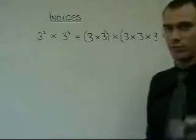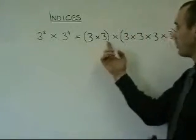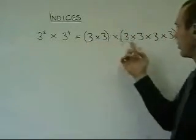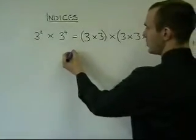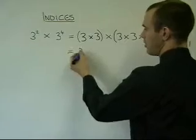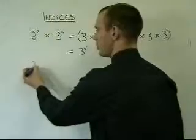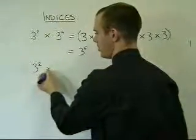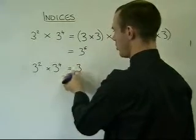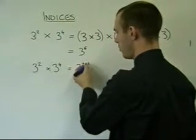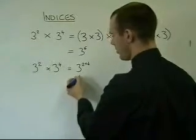What we now need to do is simplify this up. We are effectively timesing 3 by itself 1, 2, 3, 4, 5, 6 times. So we can rewrite this as 3 to the power of 6. If we refer this back to the original question, it's 3 to the power of 2 times 3 to the power of 4, which is 3 to the 2 plus 4, which equals 3 to the power of 6.